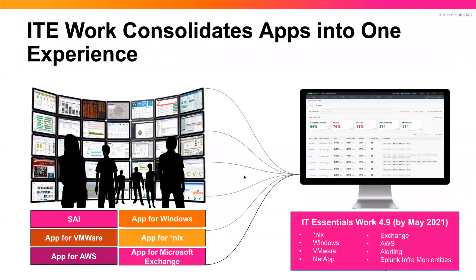This slide is a quick representation of what I mentioned earlier. On the left-hand side, you see six applications we've historically used for monitoring pieces of infrastructure. Those six applications have over 440,000 downloads, so we know that a lot of customers find these popular. But as I mentioned, they're developed by different teams at different times and have a significantly different user experience. And they're all going to be migrated to IT Essentials Work 4.9 by mid-May of 2021.